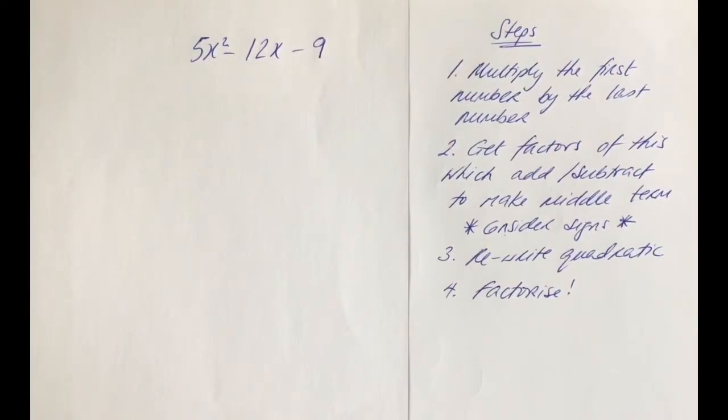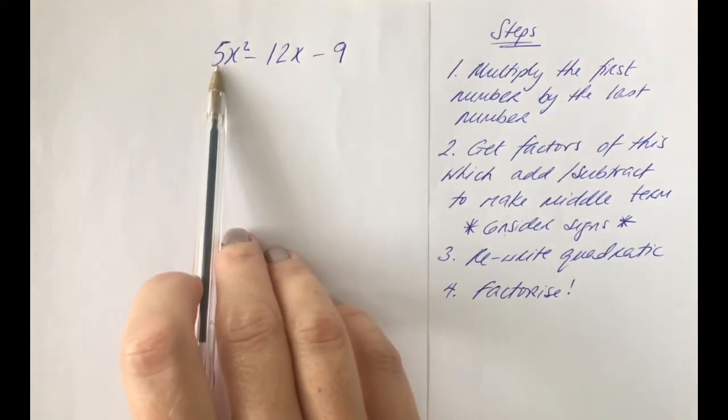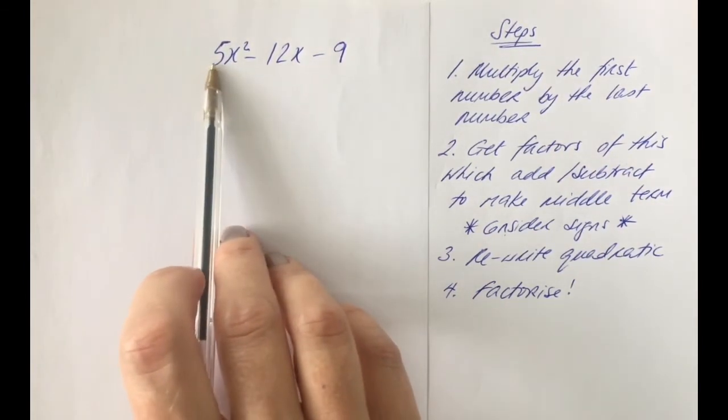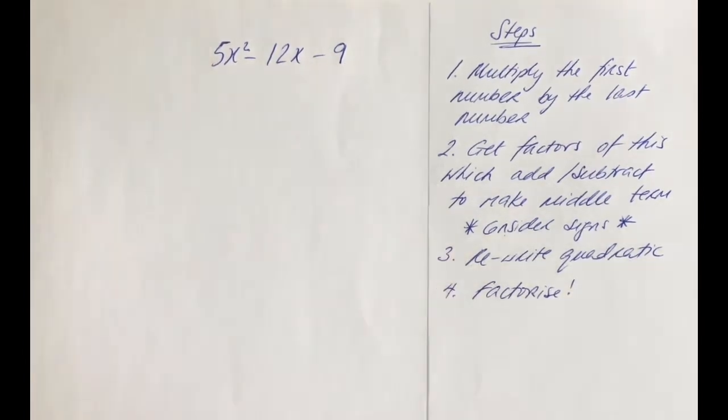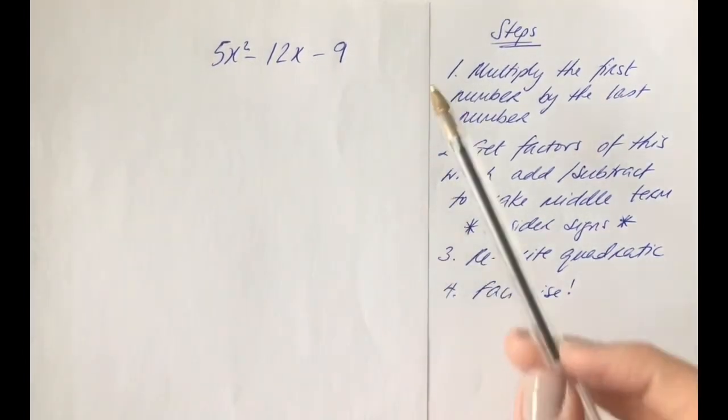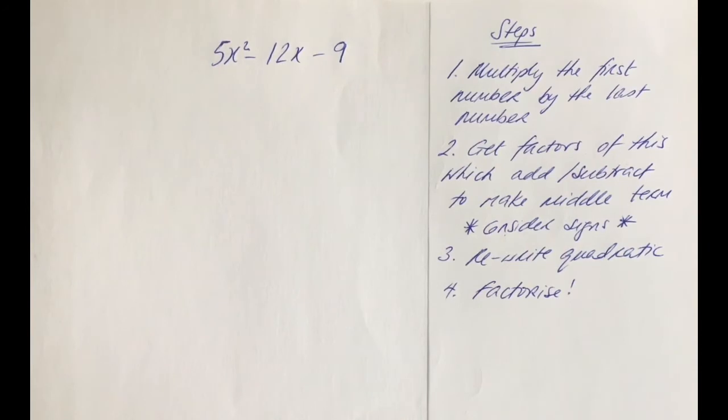So try this question. Again, working through your four steps because we have a coefficient greater than 1. We have a number here that's greater than 1. So, this is going to make it a more complicated quadratic. We can't skip steps. Therefore, we must work through every single one. Right. Pause the video. See how you get on with this one.